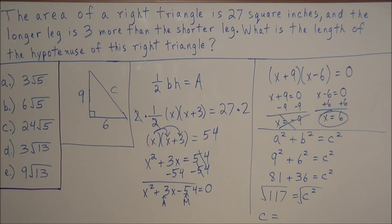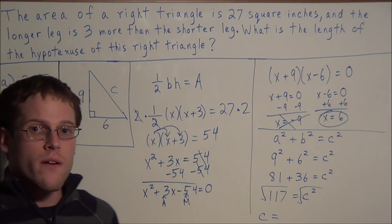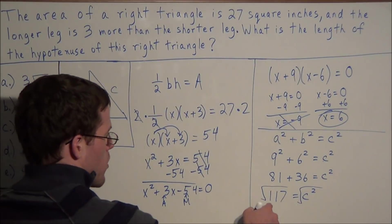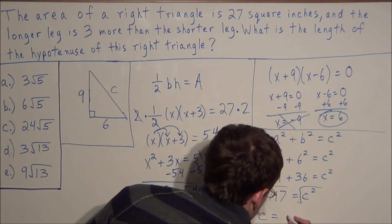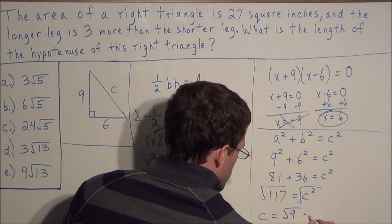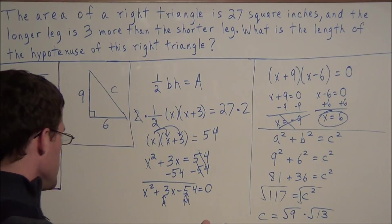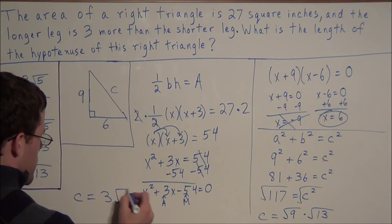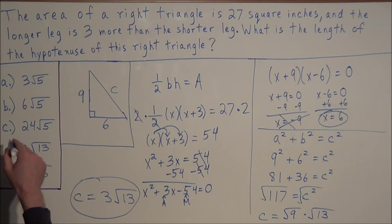We don't have the square root of 117 as an answer choice directly, so we simplify the radical by looking for perfect square factors of 117. Noting that one plus one plus seven equals nine, the digit sum tells us 117 is divisible by nine, and nine is a perfect square. So we write c equals the square root of nine times thirteen. The square root of nine is three, and the square root of thirteen cannot be simplified because thirteen is prime. So the length of the hypotenuse is three radical thirteen.